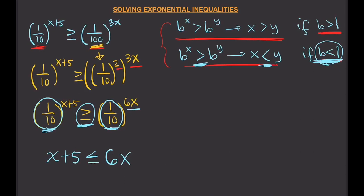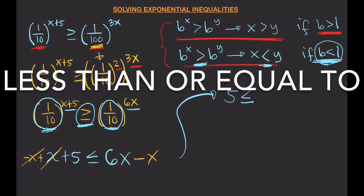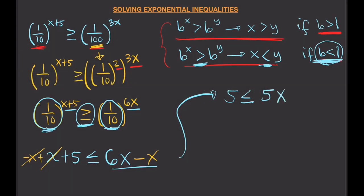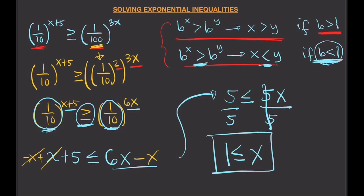So we have x + 5 ≤ 6x. Subtracting x from both sides gives 5 ≤ 5x. Dividing both sides by 5 gives 1 ≤ x, or equivalently x ≥ 1. That is the solution for the second example.